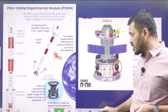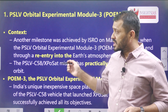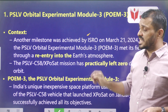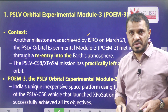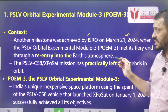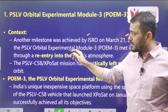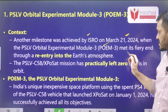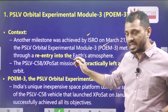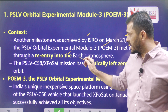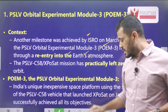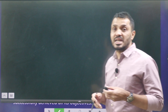So first the context: ISRO recently announced that they achieved a milestone on 21st March 2021, when the PSLV Orbital Experimental Module POEM 3 met its objective and re-entered into the Earth's atmosphere. This is a statement given by ISRO.